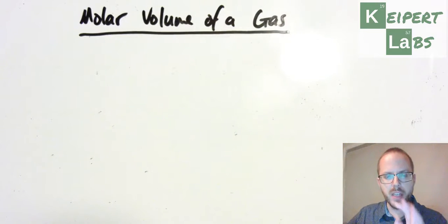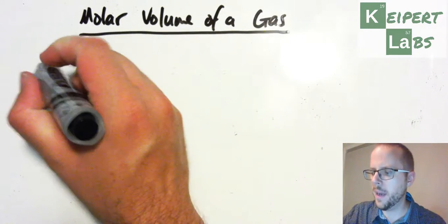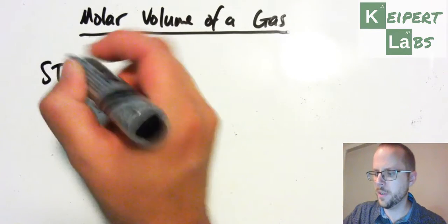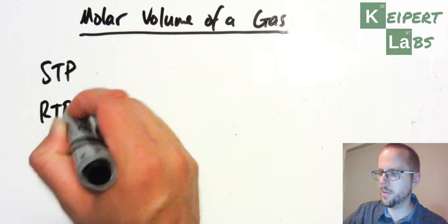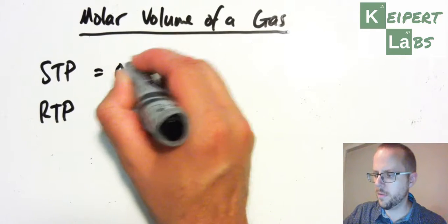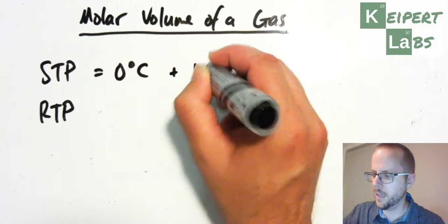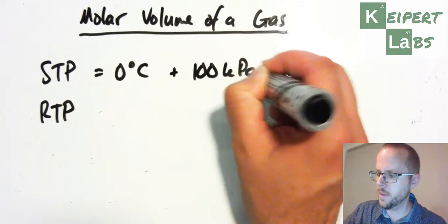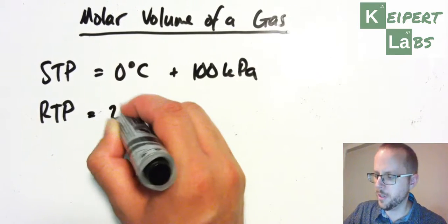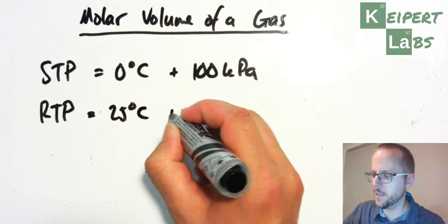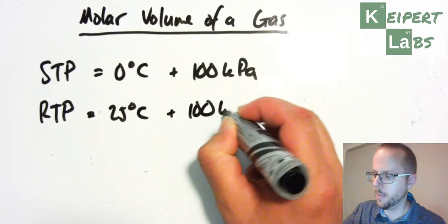And so what we say is, right, well, we've said the same temperature and pressure, but we need to standardise that. So we have two sets of conditions that we talk about. Standard temperature and pressure, just to remind you, which is 0 Celsius and 100 kilopascals of pressure, and room temperature and pressure, which is 25 Celsius and 100 kilopascals of pressure.